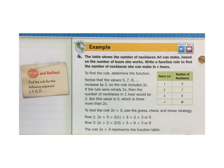Let's do another example. The table shows the number of necklaces Ari can make based on the number of hours she works. Write a function rule to find the number of necklaces she can make in x hours. So in 1 hour she makes 5, in 2 hours she makes 7, in 3 hours she makes 9. To find the rule, determine the function. So this is the key. Notice the values are 5, 7, 9. It increases by 2. So the rule includes 2x. If the rule were simply 2x, then the number of necklaces in 1 hour would be 2, but this value is 5, which is 3 more than 2x.